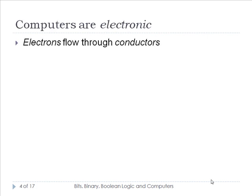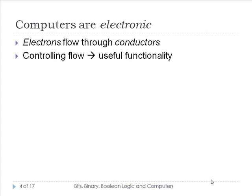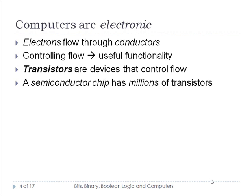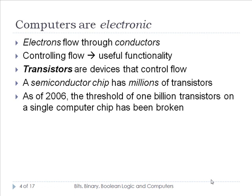Computers are electronic, meaning electrons flow through conductors. Useful functionality is produced by controlling the flow of electrons through the conductors — controlling how they go through the machine. A transistor is a device that controls electron flow. Therefore, a semiconductor chip has millions of transistors. As of 2006, the threshold of one billion transistors on a single computer chip or CPU has been broken.